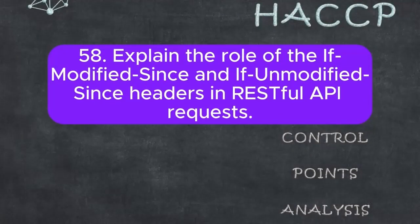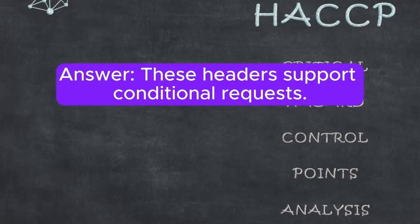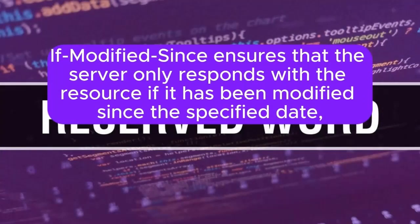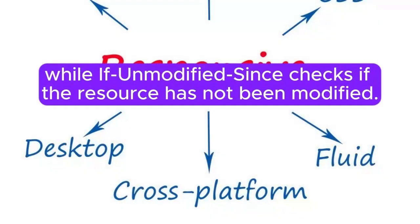Question 58: Explain the role of the If-Modified-Since and If-Unmodified-Since headers in RESTful API requests. These headers support conditional requests. If-Modified-Since ensures that the server only responds with the resource if it has been modified since the specified date, while If-Unmodified-Since checks if the resource has not been modified.